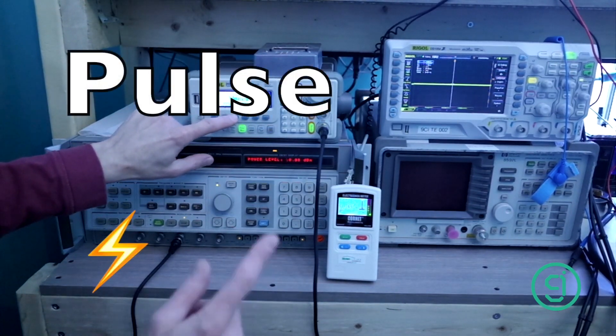This is now the ED88 Cornet meter, starting with a 100 microsecond pulse and trigger, looks good. We're going to reduce this down to 50 microsecond pulse. Trigger, okay, it showed it.